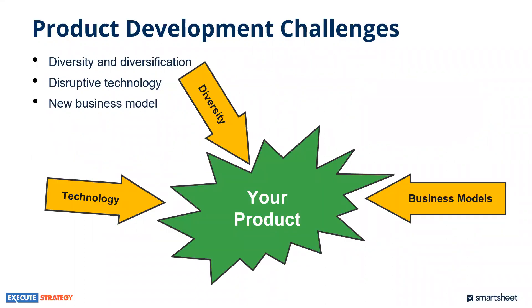So why are there challenges? We've divided them into three main groups. The first is diversity — diversity in competitors, customers, and staff. Diversity can be a positive thing, allowing organizations to reach customers all over the world and sell products through the internet. But the bad news is your competitors are no longer the store around the corner — it's an organization anywhere in the world that can approach your customers just as easily.